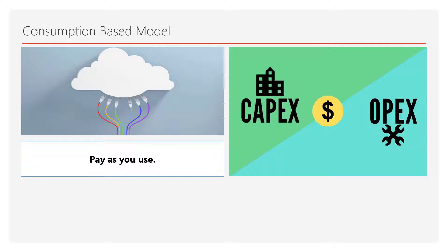In the CapEx versus OpEx discussion in our previous video, some companies would go and spend a million dollars on a building, infrastructure, and computer hardware and all the investment required to set them up. But cloud often operates on a consumption-based model, which means that most services or some services can be paid for as you use them.